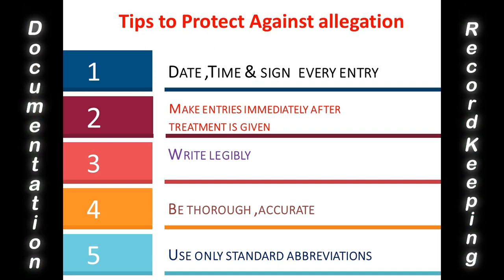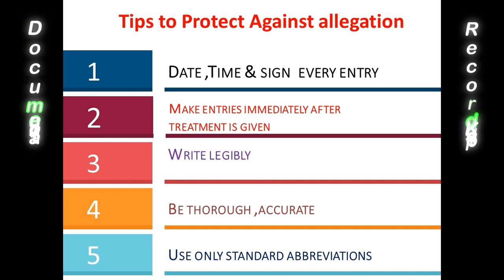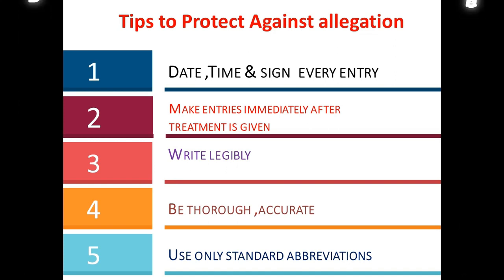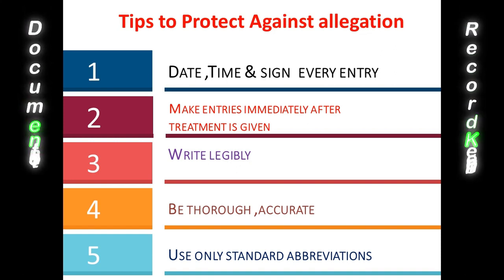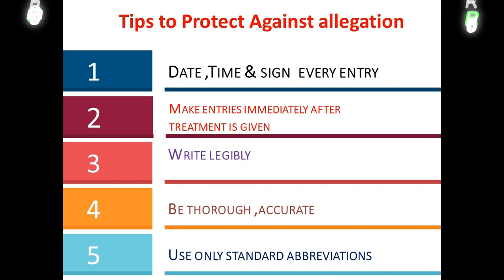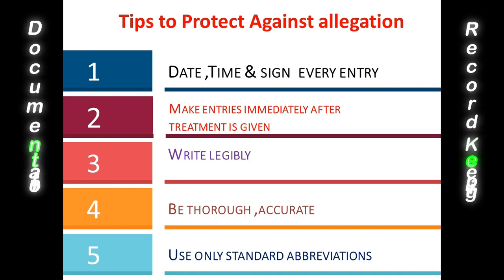There are five tips to protect yourself against any allegation. First, always write the date, time, and signature in the patient's card or file after giving treatment — it becomes proof and a proper document. Second, make all entries immediately after treatment is given. Third, write neatly and legibly so handwriting is properly readable. Fourth, be accurate and thorough — write completely and accurately. Fifth, always use only standard abbreviations to avoid misunderstandings.